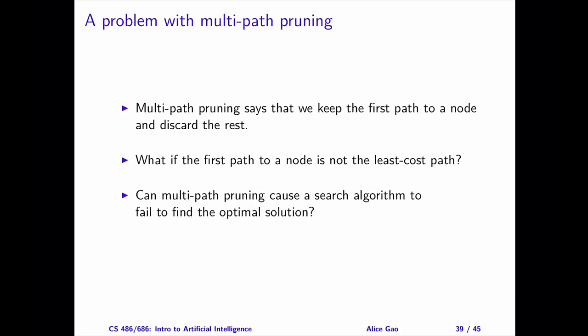Let's consider two search algorithms: the lowest cost first search and the A-star search. We will answer two questions for each algorithm. First, could multipath pruning cause the algorithm to discard the optimal solution? If the answer is yes, we need to show an example. If the answer is no, we need to prove it. Second, if multipath pruning causes the algorithm to discard the optimal solution, what can we do about it? Can we modify the algorithm to ensure that it still finds the optimal solution even with multipath pruning?